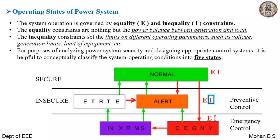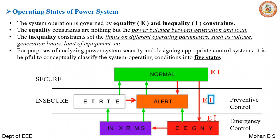In the emergency state, we have E and Ī (I-bar), meaning there is an imbalance between generation and load — either at system levels or at local levels. There are different reasons for the emergency state; this could be because of instability due to energy buildup in the system.